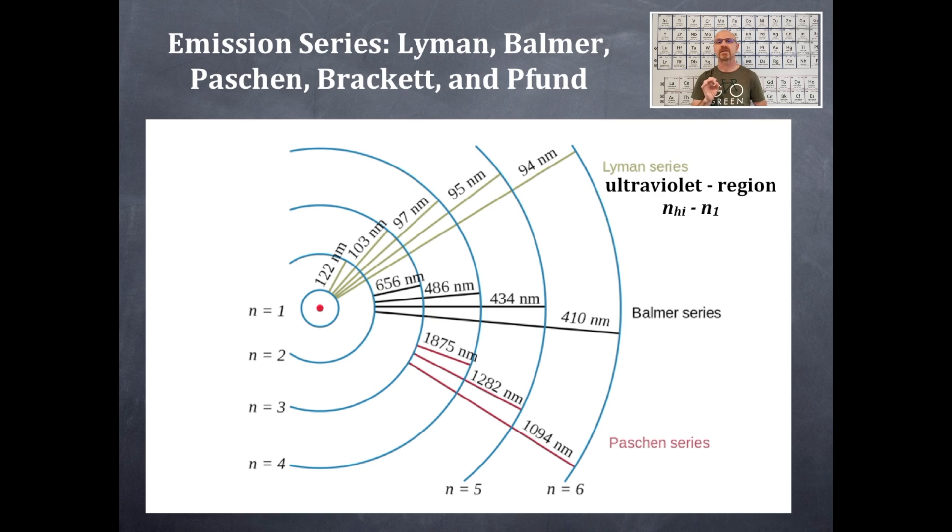The Lyman series is in the ultraviolet region, and that is when an electron goes from N of high to N of one. Those are huge falls. That's in the ultraviolet region. High energy. Ultraviolet. That's why it's such a high N all the way to N of one. That's the biggest gap.